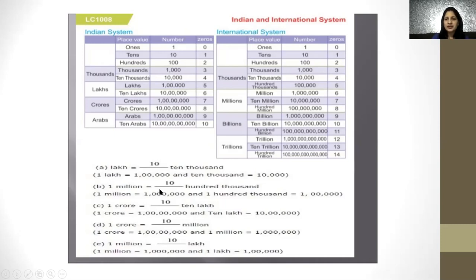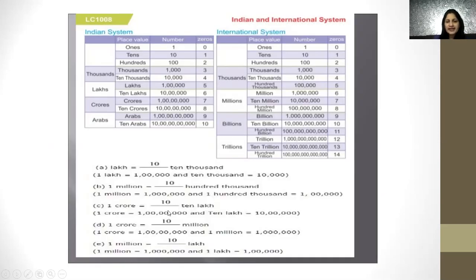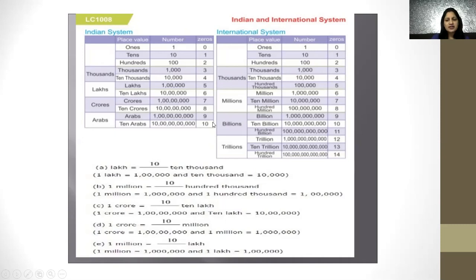1 million is equal to 10 lakh. Now for 1 crore and its relation to millions: a crore has 7 zeros and a million has 6 zeros — 7 minus 6 is 1, so we write 10,000,000, meaning 10 million makes 1 crore. And confirming: 1 million equals 10 lakh because a million has 6 zeros and a lakh has 5 zeros — 10 lakh makes 1 million. This is how we relate the Indian and International systems of numeration.